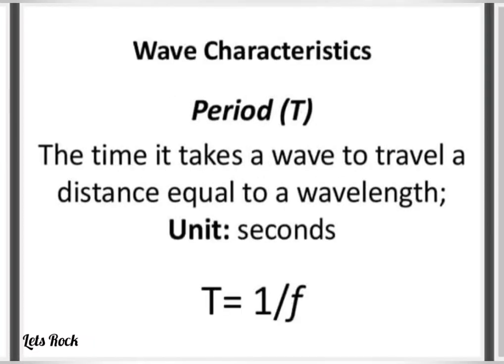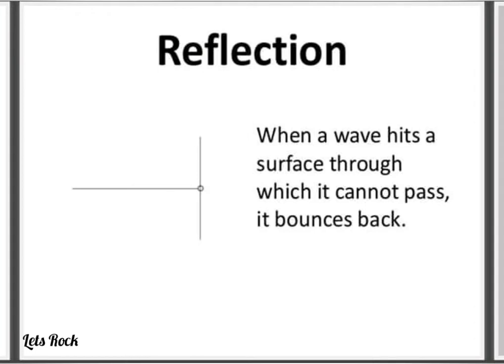Period - the time it takes a wave to travel a distance equal to a wavelength, unit is seconds. T equals 1 over f. Reflection - when a wave hits a surface through which it cannot pass, it bounces back.